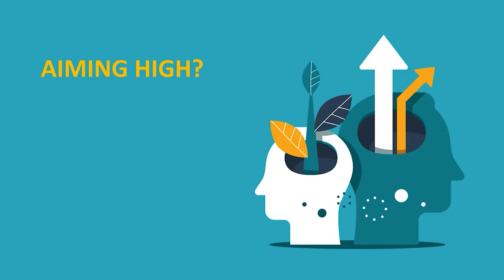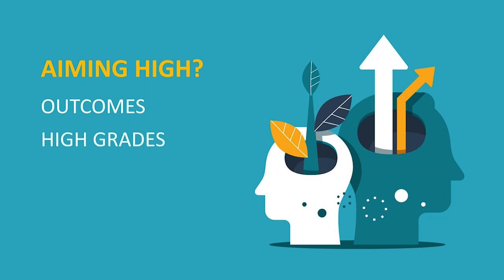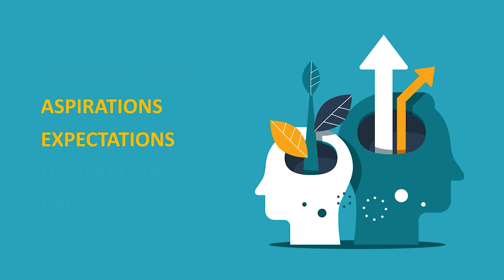When we talk about students aiming high, what exactly do we mean? What is it we want to develop in our students and how do we know when we're achieving this? There are a number of indicators that can highlight that students are aiming high, including outcomes, high grades, destinations and careers. But to get there we need to focus on raising our students' aspirations and expectations.